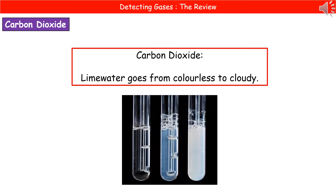Welcome to our review on detecting gases. As part of our chemistry GCSE, we need to be able to identify a gas using some form of experimental procedure. The first gas we're going to look at is carbon dioxide, and the way we detect it is to bubble it through a chemical called lime water.